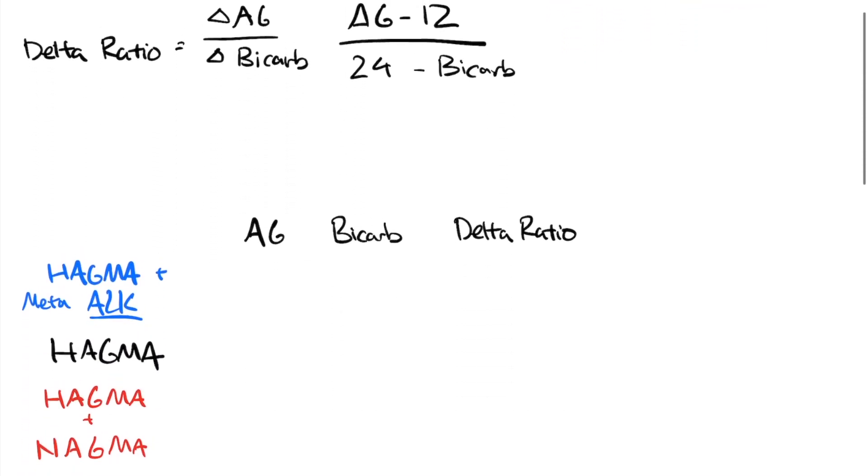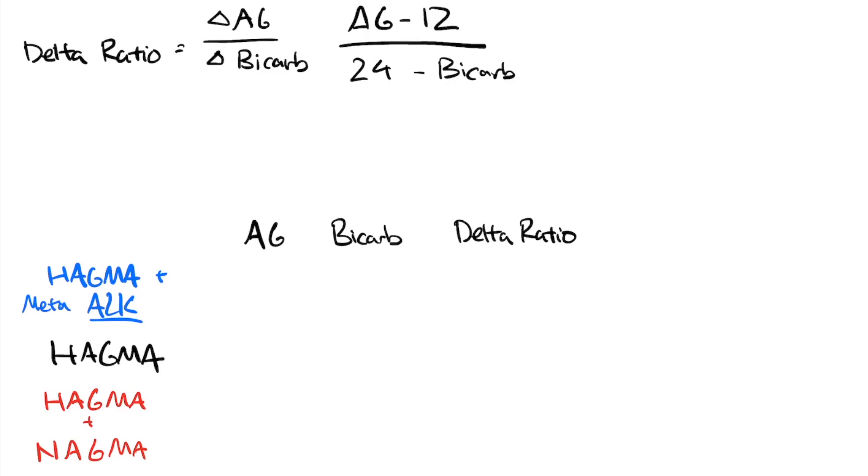Here we have those three scenarios I talked about above. We'll start with the one in the middle, which is just a pure anion gap metabolic acidosis. For simplicity's sake, let's say we have an anion gap of 22 and a bicarb of 14.